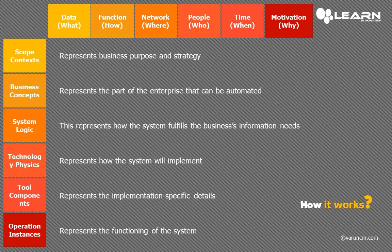Next is tool components, which represents the implementation-specific details, and the last one is operation instances, which represents the functioning of the system. To fill the 36-cell matrix, you map each column — data, function, network, people, time, motivation — against each row, from scope context down to operation instances, which represents the actual implementation phase.